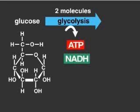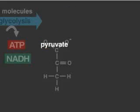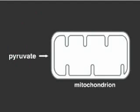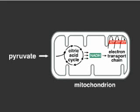In eukaryotes, the breakdown product pyruvate is imported into mitochondria, where it ultimately feeds into the citric acid cycle and the electron transport chain.